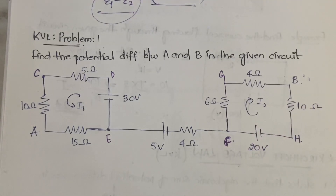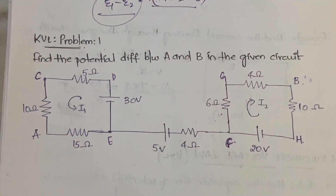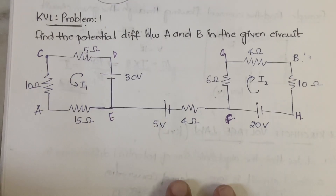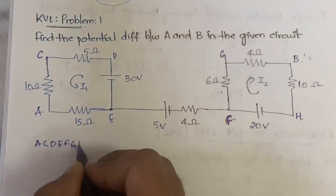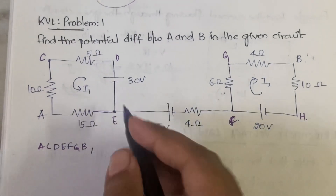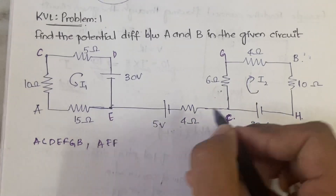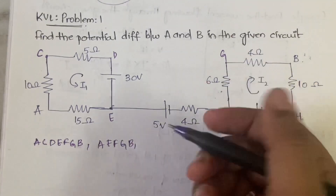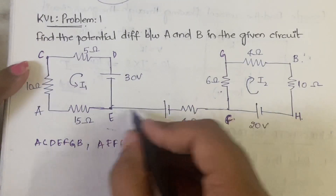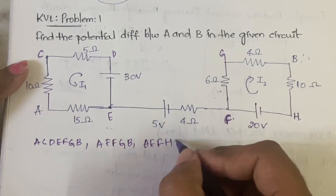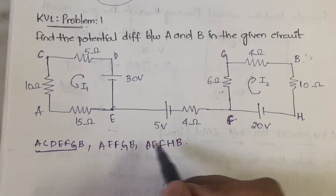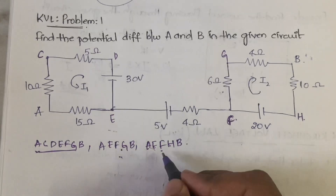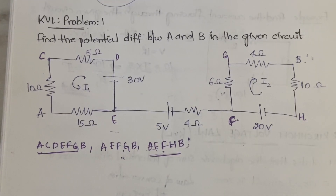The second step is to select the path in which you want to go to find the potential difference between A and B. The available paths are: A-C-D-E-F-G-B (one path), A-E-F-G-B (another path), and A-E-F-H-B. The first one is a long and complicated path, so you can eliminate that. From the remaining two you can select any path. I am selecting the path A-E-F-H-B.